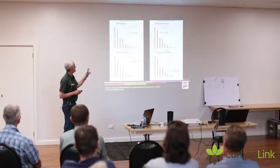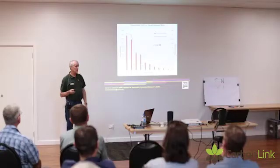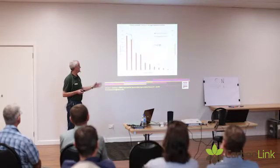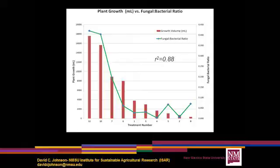As you can see, there was no correlation to plant growth with nitrogen, phosphorus, potassium, or organic matter. What did correlate was the fungal-to-bacterial ratio. So this put us on to the next analysis.